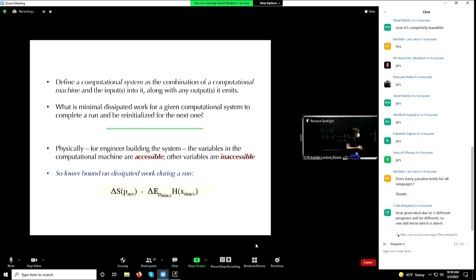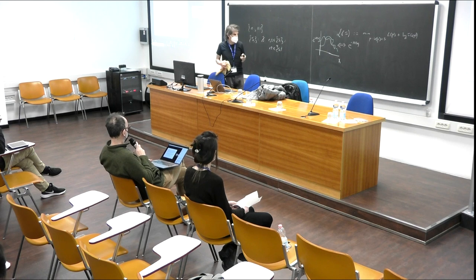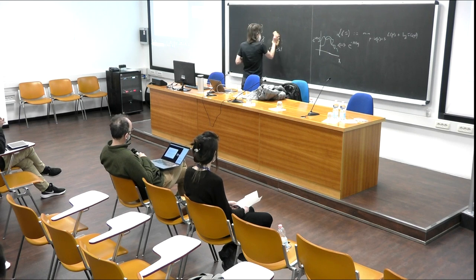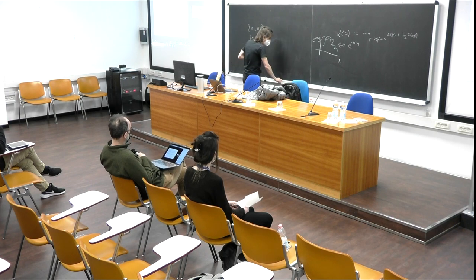So that's our starting point: the lower bound on the dissipated work, once we decompose the computational system into accessible and inaccessible variables, requires work of delta S of the distribution over the accessible ones to reinitialize. The engineer has to burn that, and at best they could extract back the change in the expected value of the Hamiltonian whose Boltzmann distribution is the initial distribution over the inaccessible degrees of freedom. This is obviously a very weak lower bound.